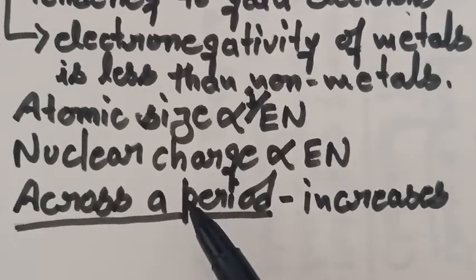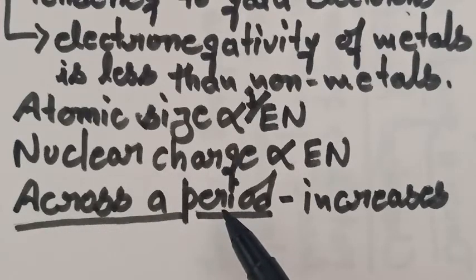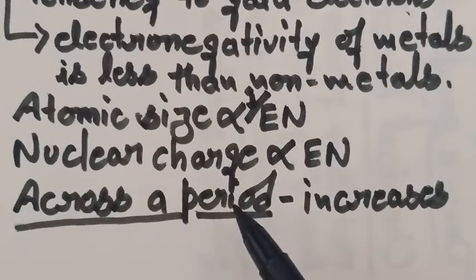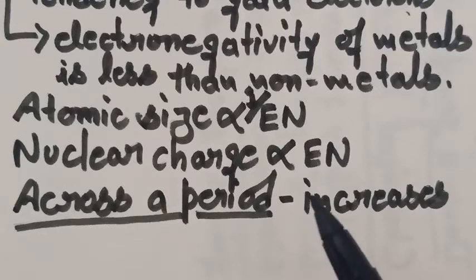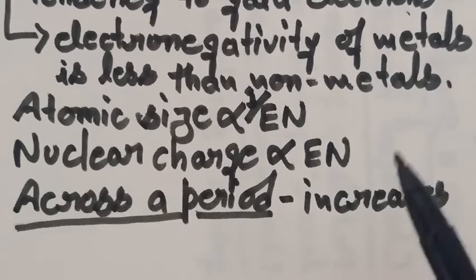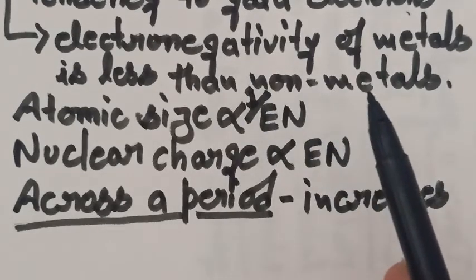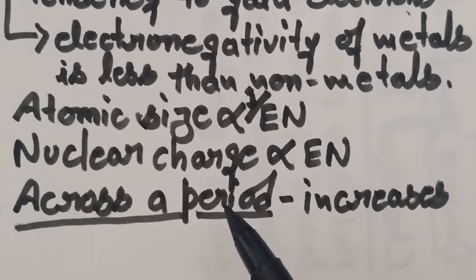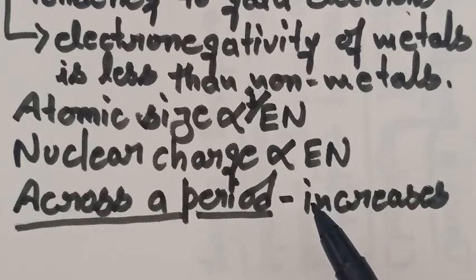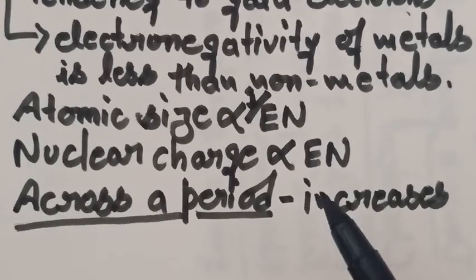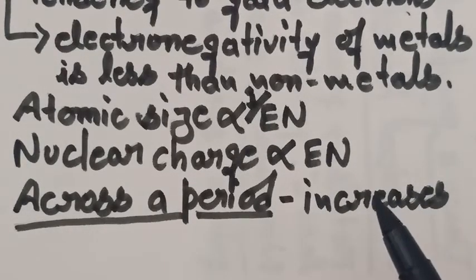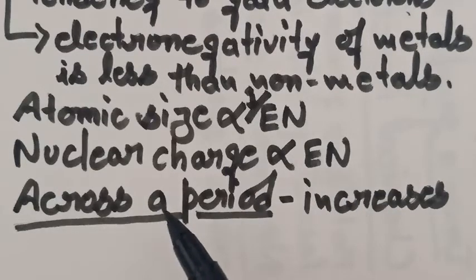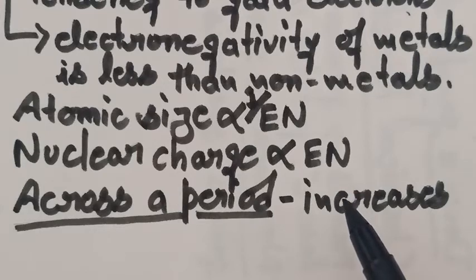The next thing is trends in electronegativity across a period. As we know, when one moves from left to right in a period, the non-metallic character increases, and thus the electronegativity also increases. This can also be understood in terms of atomic size — atomic size decreases while moving left to right, and hence electronegativity increases.